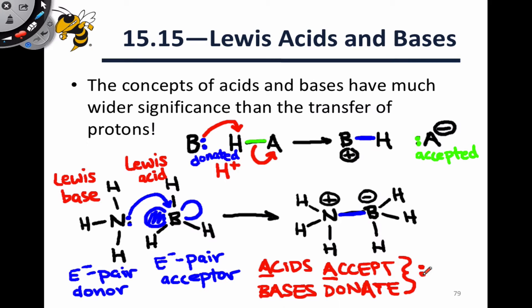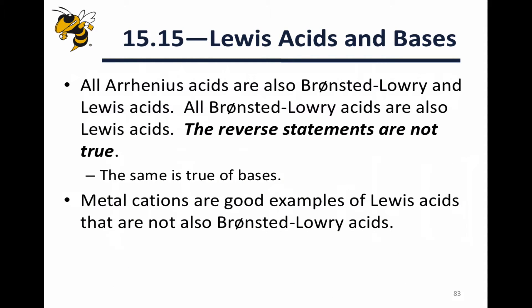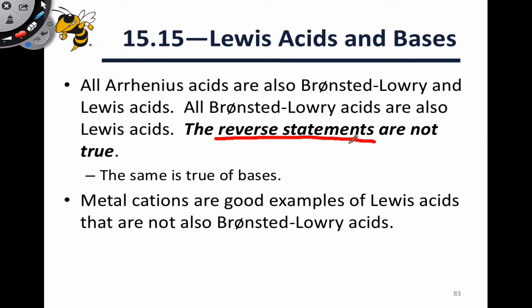It's important to keep in mind that we're talking about pairs of electrons in the Lewis acid-base paradigm. In Bronsted-Lowry acid-base reactions, we can also identify the base as a Lewis base and the acid as a Lewis acid. The beauty of Lewis acid-base theory is its generality: every Arrhenius acid is a Lewis acid, every Bronsted-Lowry acid is a Lewis acid, every Arrhenius base is a Lewis base, and every Bronsted-Lowry base is also a Lewis base. That said, the reverse statements are not true, and that's important to keep in mind.